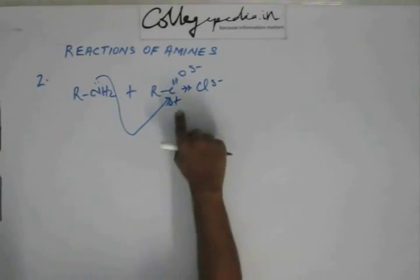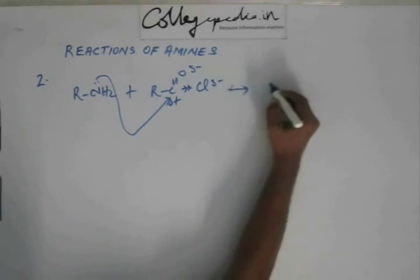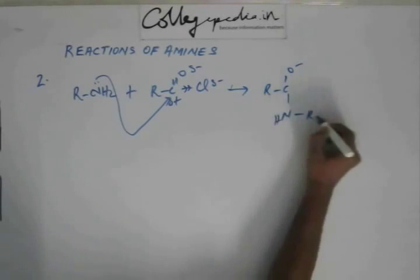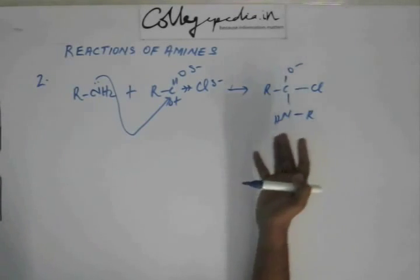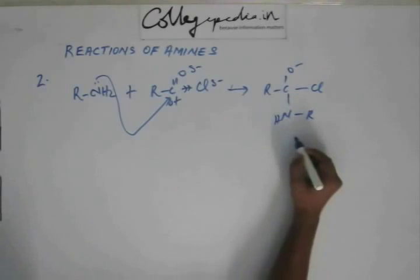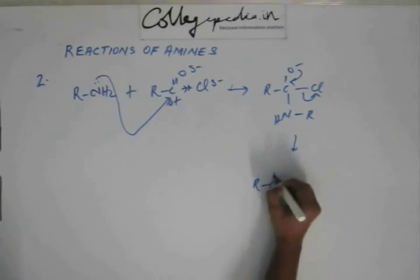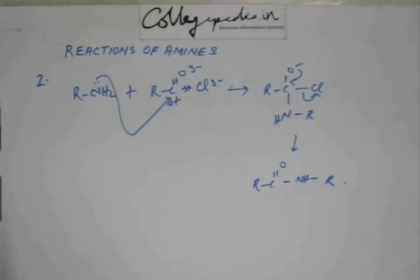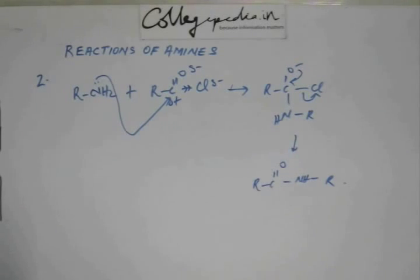When that happens, this nitrogen forms a bond with carbon and chlorine comes out, and C=O is regenerated. When this nitrogen attacks the carbon, the C=O pi bond breaks because carbon is making a new bond and a previous bond has to be broken. When the C=O pi bond is regenerated, the chloride ion comes out. So what we have is a substituted amide — this is a simple nucleophilic attack in which the amine acts as a nucleophile.